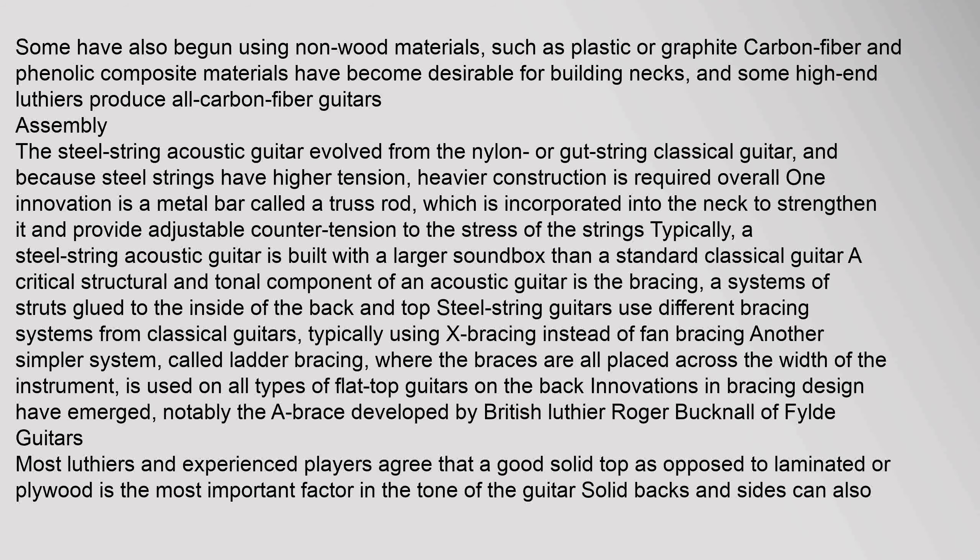Assembly: The steel string acoustic guitar evolved from the nylon or gut string classical guitar, and because steel strings have higher tension, heavier construction is required. One innovation is a metal bar called a truss rod, which is incorporated into the neck to strengthen it and provide adjustable counter tension to the stress of the strings. Typically, a steel string acoustic guitar is built with a larger soundbox than a standard classical guitar. A critical structural and tonal component of an acoustic guitar is the bracing, a system of struts glued to the inside of the back and top. Steel string guitars use different bracing systems from classical guitars, typically using X bracing instead of fan bracing.